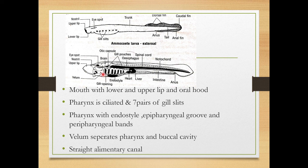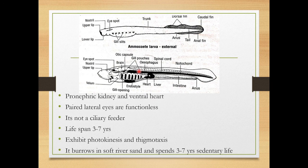The pharynx is provided with the endostyle, epipharyngeal grooves, and peripharyngeal bands are also present. There is a structure called the velum which separates the buccal cavity from the pharynx. There is a straight alimentary canal provided with gallbladder, liver, etc.